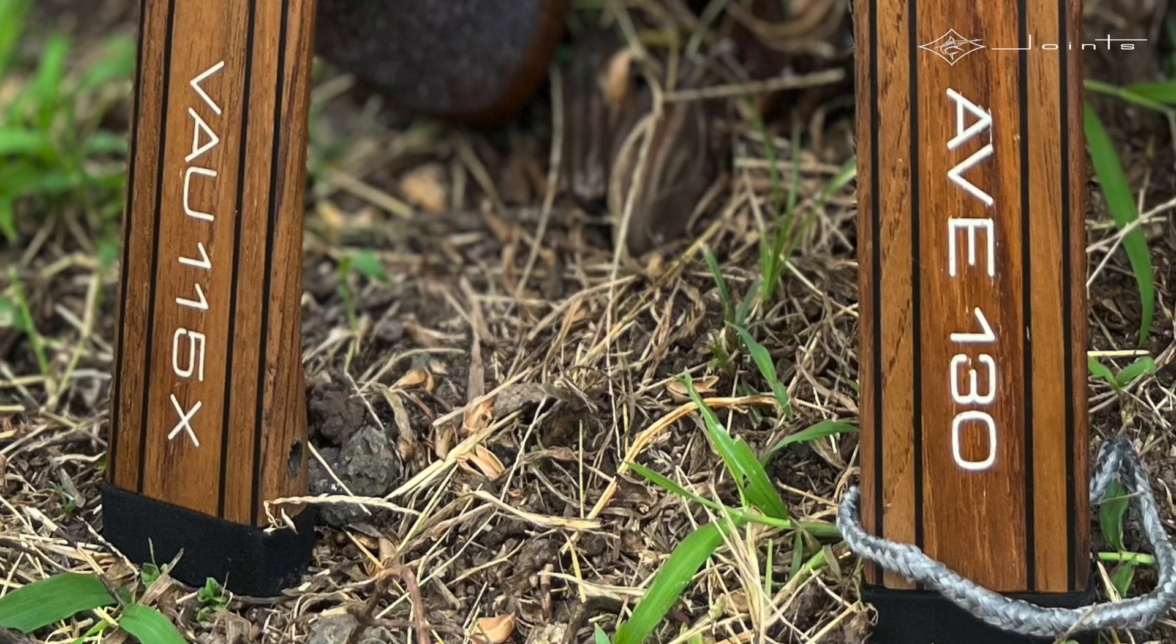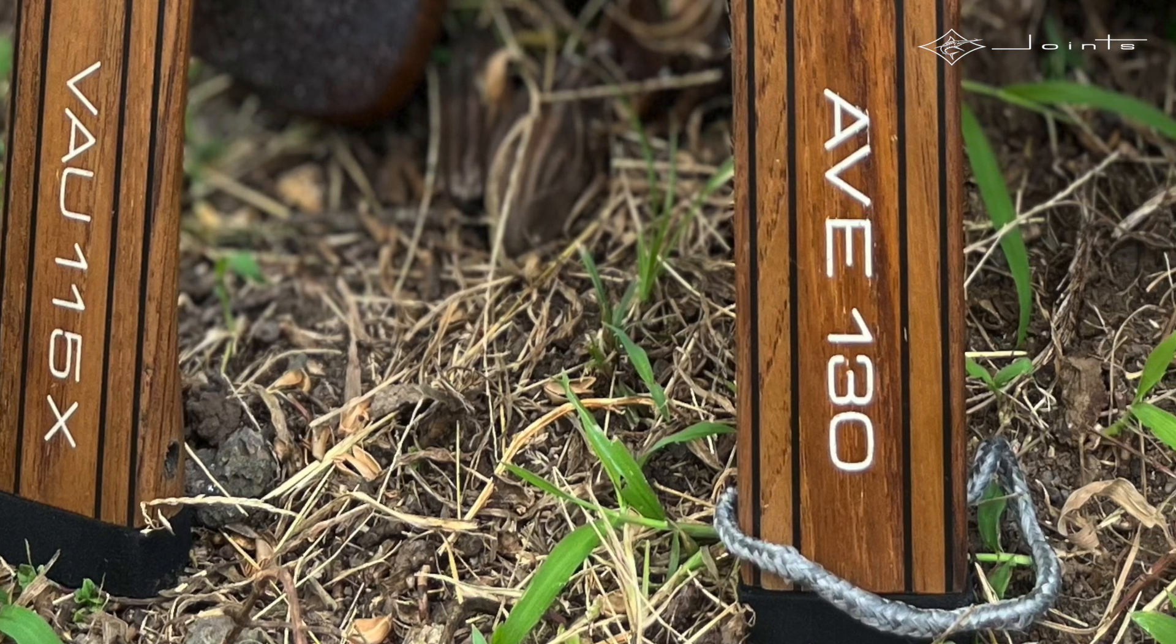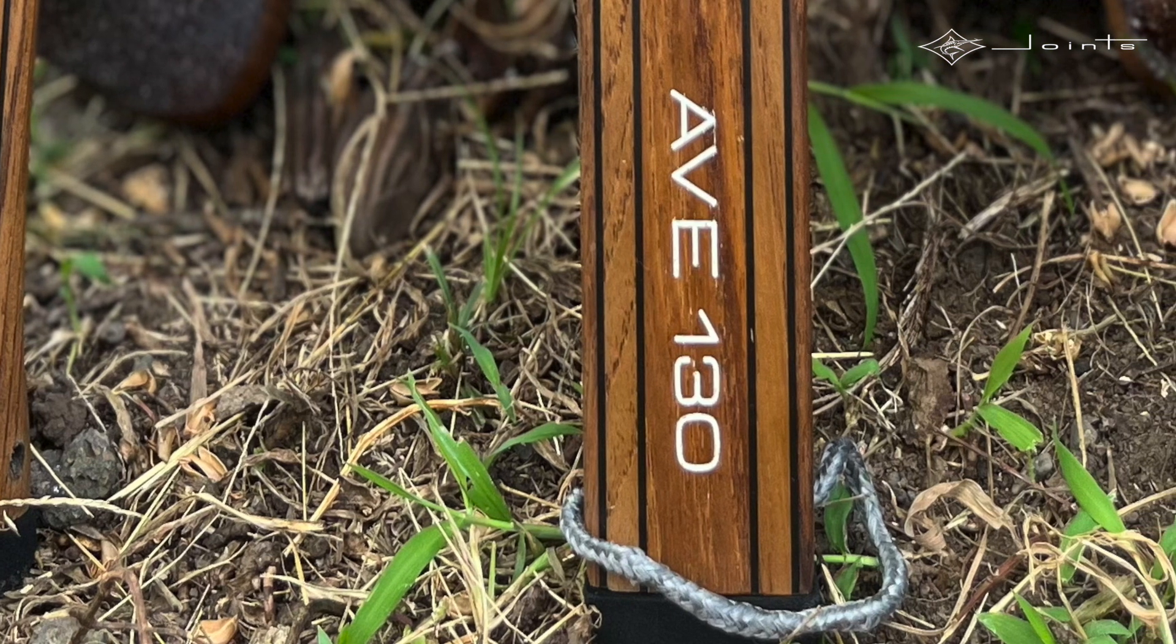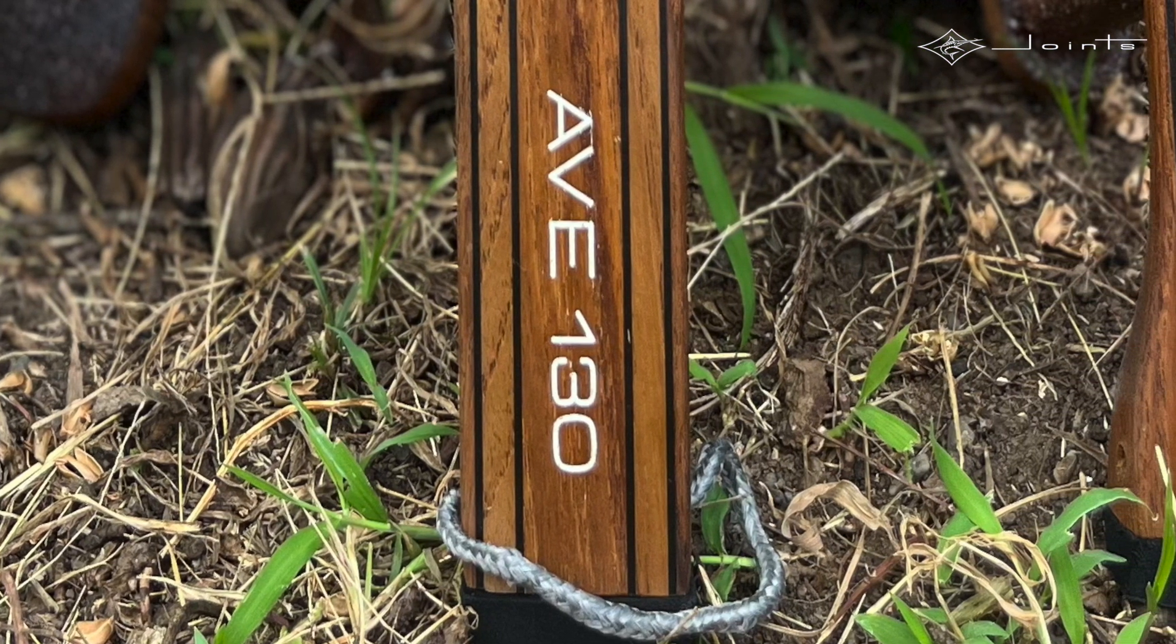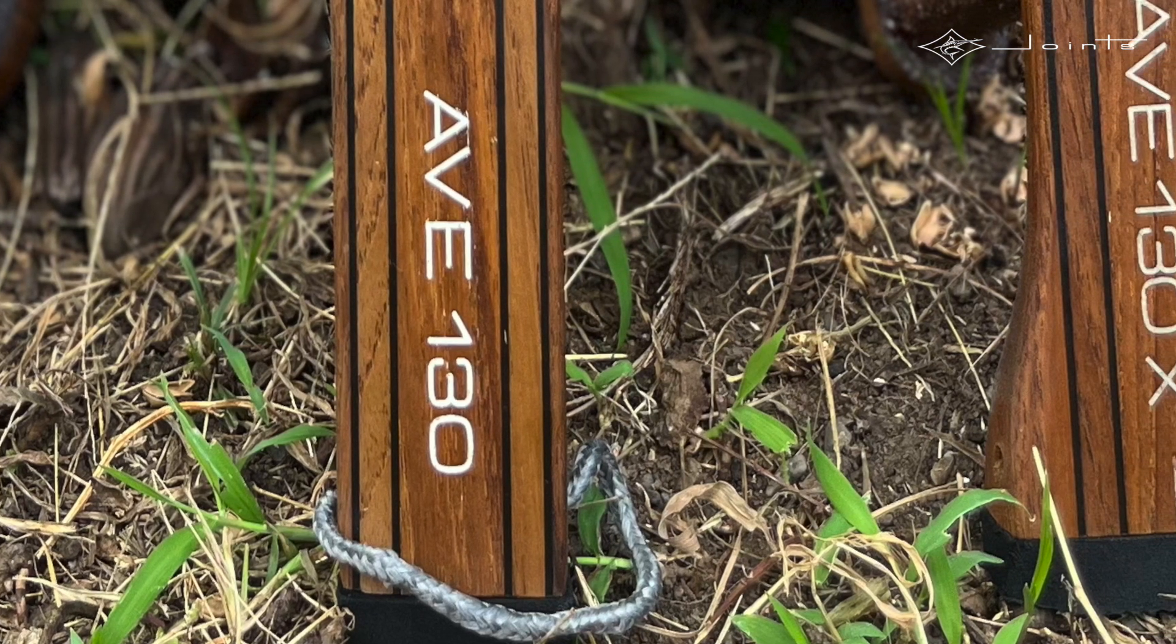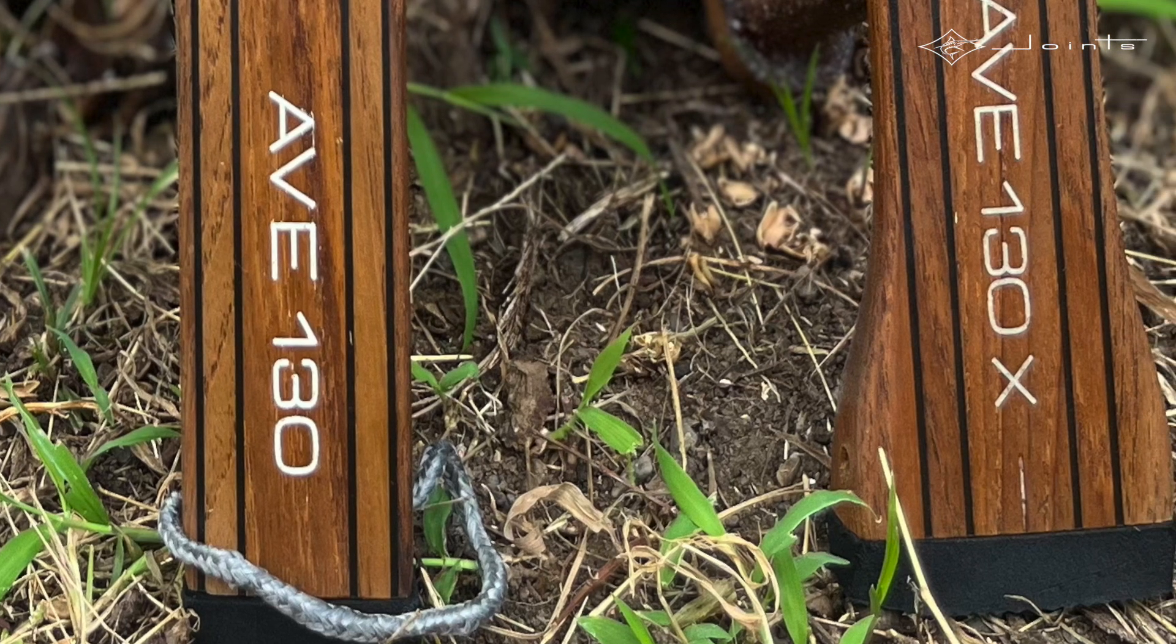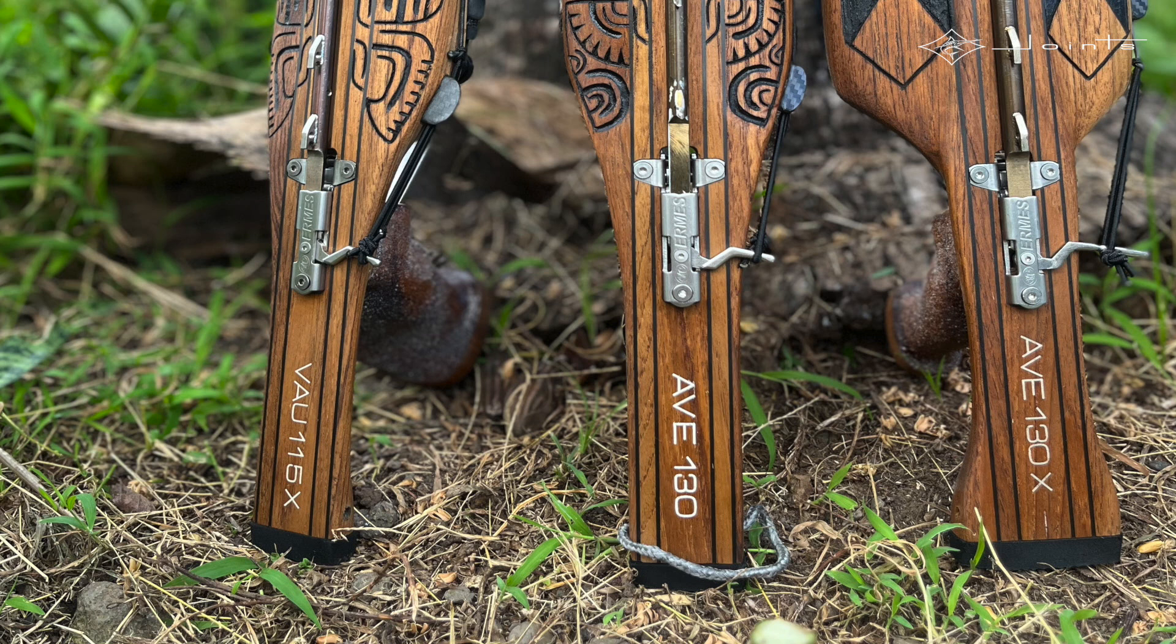Next we have the Ave 130, my first tuna gun - same deal, four brand new bands and an 8.5 x 160 centimeter double barb shaft. Finally, the Ave 130 Extreme, this is my new hyper tuna gun, a brand new gun that I'm actually testing these days. It's loaded with five brand new bands and a huge 9.5 millimeter x 160 centimeter shaft.